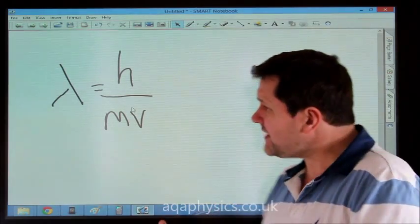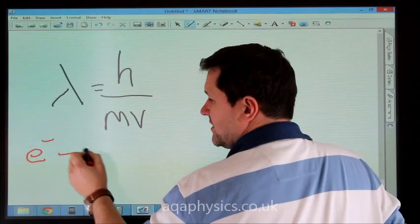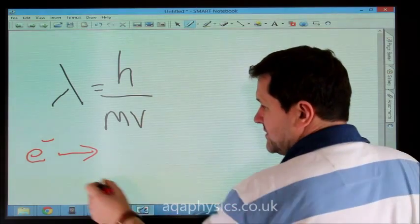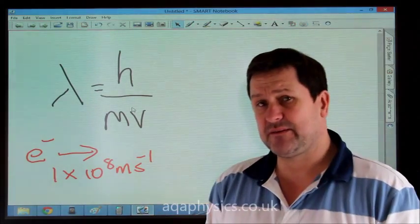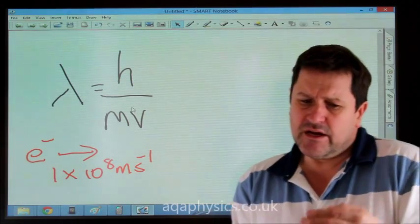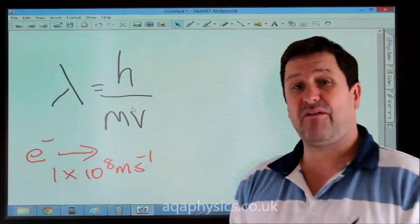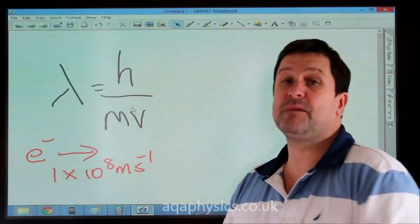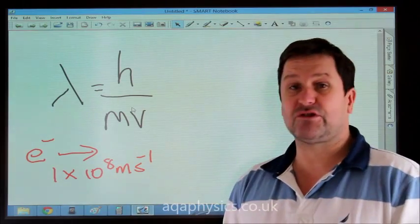So for example, if we had an electron travelling at 1 times 10 to the 8 metres per second, we could calculate its wavelength. Now, you can use this for electron microscopes, and you can create electrons of different wavelengths depending upon how fast you accelerate them. So you can decide what wavelength you would like, and then calculate the accelerating potential difference necessary to accelerate electrons to that wavelength.